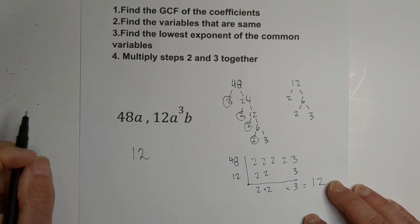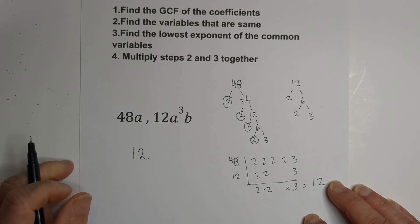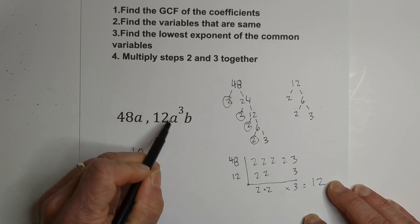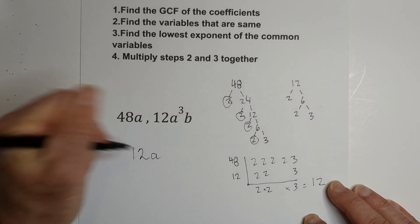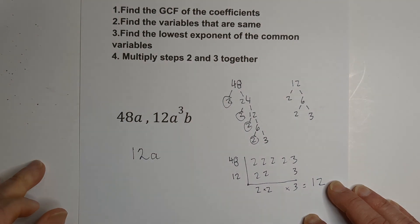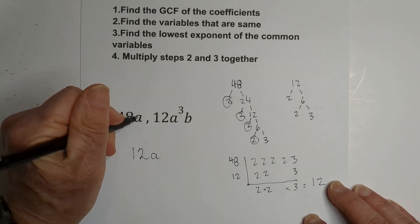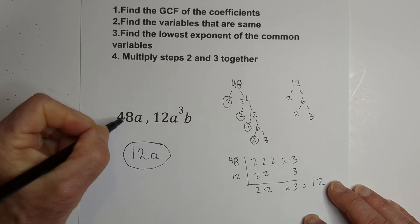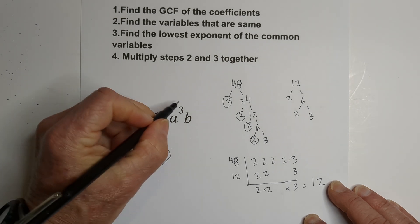Remember, we're not factoring. We're just finding the greatest common factor. Now we look for variables that are the same. We have an a and an a, but we don't have a b. And now we just go with the lowest exponent. This is to the first power. So there is the greatest common factor of 48a and 12a cubed b.